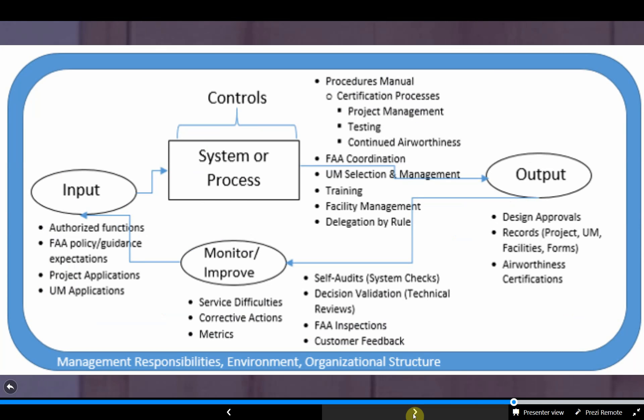Using the FAA system model, we bucketed our processes and expectations to define individual areas to be audited. A boundary is included to account for the management support and the environment that the ODA works in. Processes are identified as well as results, which reflect on the performance we need to be doing well at to be a robust ODA. There are also different tools we use to monitor and improve in a continuous fashion. These are the six areas we use to define the scope of the self-audit: the overall system, input integration, systems controls for unit member selection and management, facilities and training, systems controls for project management and the certification process, output quality, and continuous improvement.